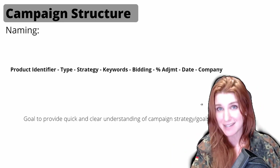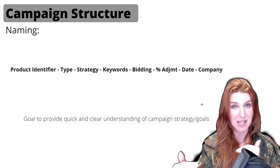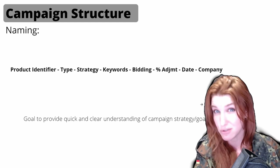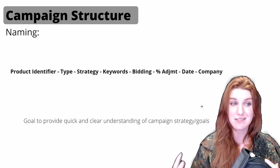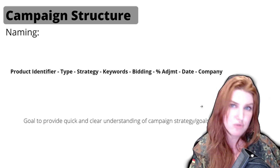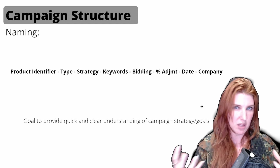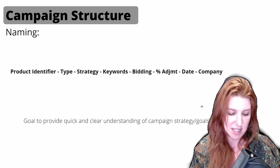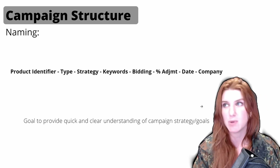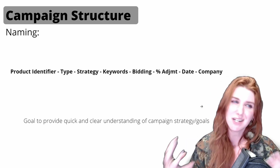A really good pro tip: always ask clients how they view their catalog. If you can adopt the language the brand manager or account owner is already using, you start speaking the same language, and if you translate that into your campaign names, it makes everyone's life much easier. For example, if you have a bunch of water bottles — one with a straw, one with a snap-top lid, one in different colors — you might label them accordingly.